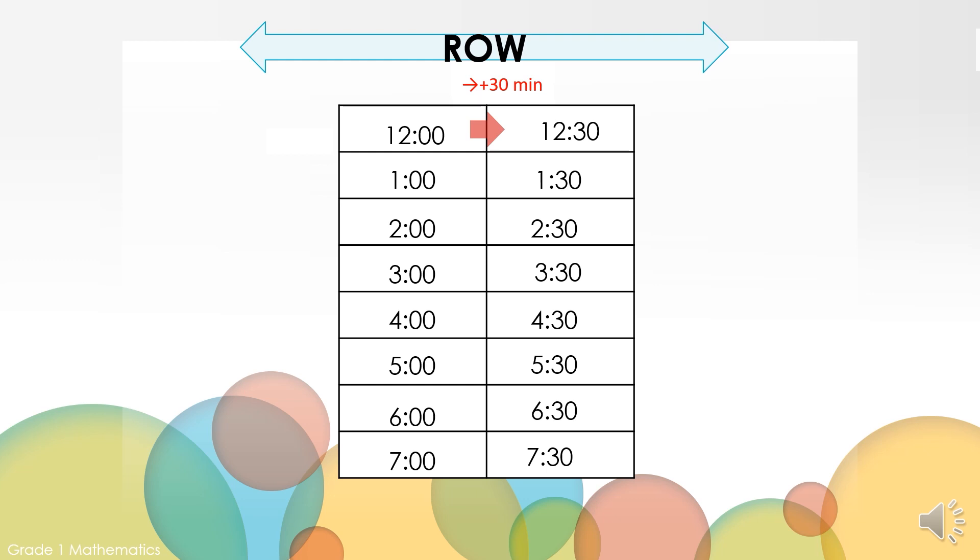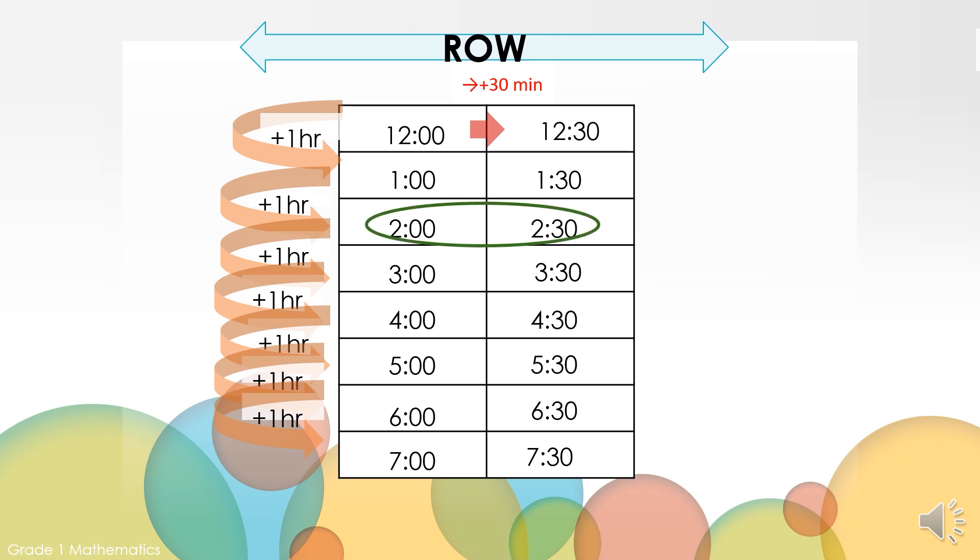What do you notice about the time on the clock as we go down the first row? As we add one hour from 12, we move to 1 o'clock. What about as we continue to go down the rows? As we go down the rows, we can see that the hour on the clock increases by 1 and the minutes do not change. How many half hours are in one hour? There are two half hours in every one hour and each half hour is made up of 30 minutes.